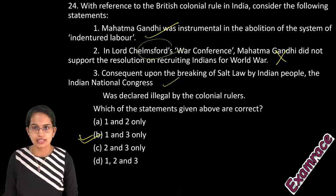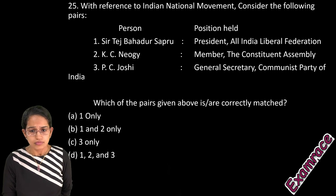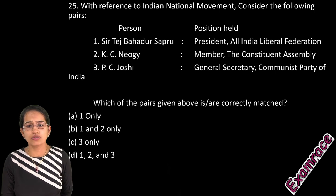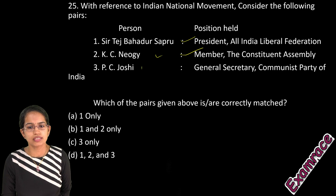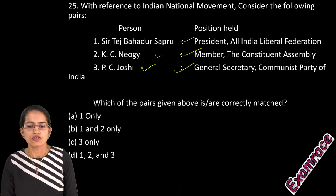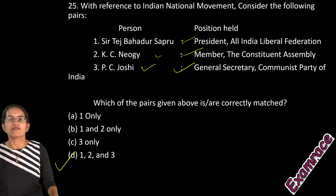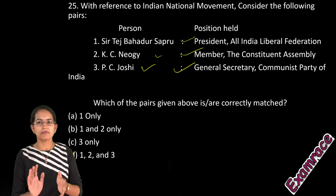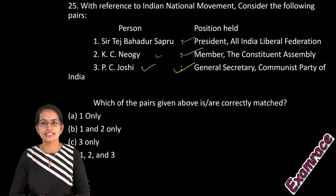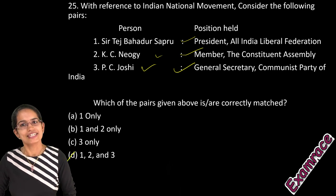Tej Bahadur Sapru was the president of the All India Liberal Federation, Nehru was a member of the Constituent Assembly, and P.C. Joshi was the first general secretary of the CPI. All three statements are correct. With this we finish the first set. We will be coming up with the next three sets, so stay tuned and stay subscribed for further updates. Have a wonderful day ahead.